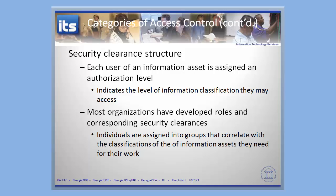Sometimes information isn't classified at a certain level unless certain pieces are pulled together into one particular location, and this can cause problems. You'll have information within the military, for example, that was classified secret — which you could go find on the CNN website — where most of the information was there, but some small components that were not led to that different classification. And sometimes your security classification of data will change over time: what may be embargoed or classified at one point, later on everybody knows about and it's no longer classified.